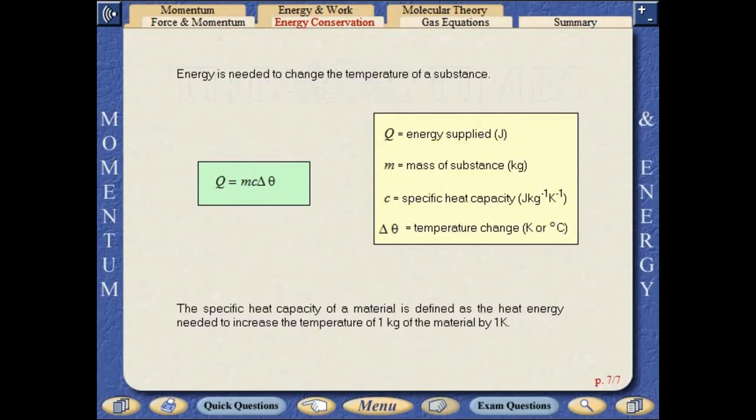Energy is needed to change the temperature of a substance. The specific heat capacity of a material is defined as the heat energy needed to increase the temperature of one kilogram of the material by one Kelvin.